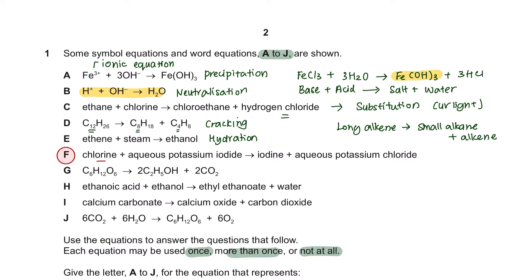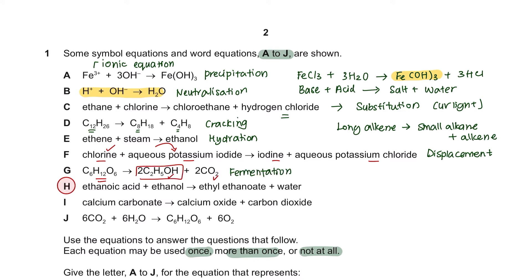Equation F: chlorine reacts with aqueous potassium iodide, forming iodine and aqueous potassium chloride. This is when a more reactive halogen displaces a less reactive halide — a displacement reaction. Equation G shows glucose converting into ethanol and carbon dioxide — this is the manufacturing of ethanol by fermentation. Equation H shows ethanoic acid, a carboxylic acid, reacting with ethanol to form an ester plus water — this is an esterification process, also from organic compounds.